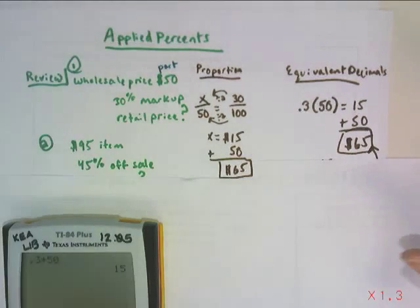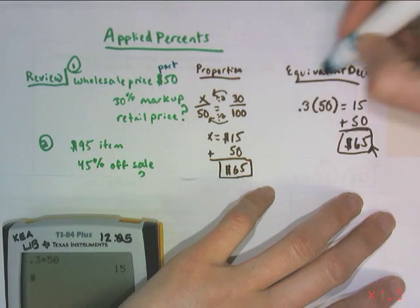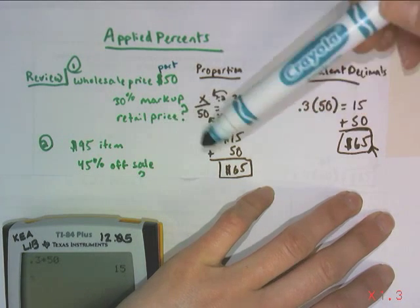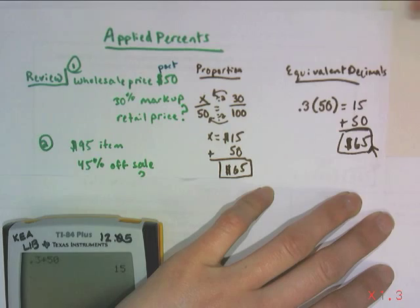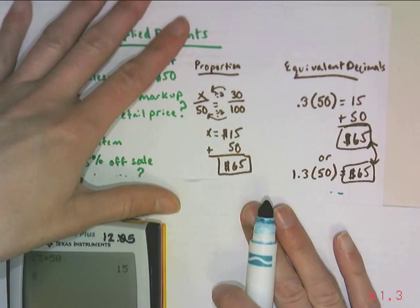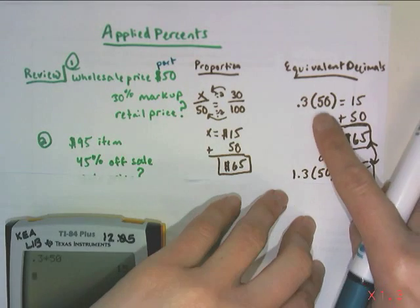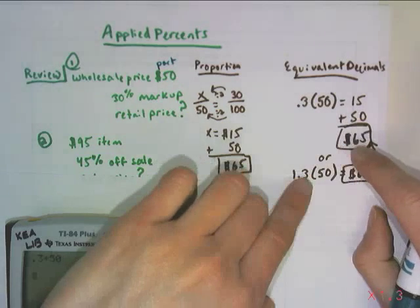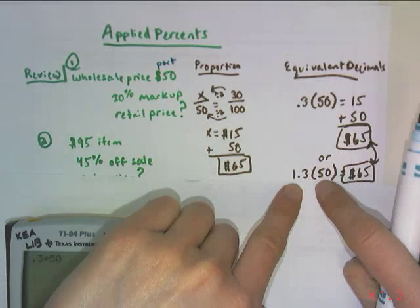Today, where we're going with this is if, instead of doing this in two steps, markups you would have to add at the end, discounts you would have to subtract, we can go ahead and do the adding and subtracting with this percentage. So if you look at what we're going to do today, this value and this value give you the $65, but in a slightly different way. Because you figured, if I multiply something by 1, I have all of itself.